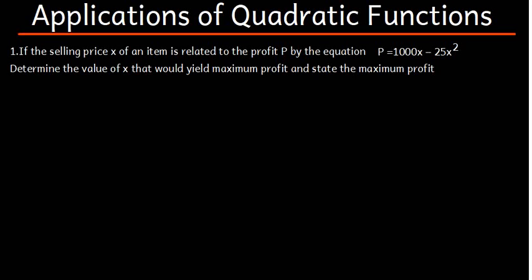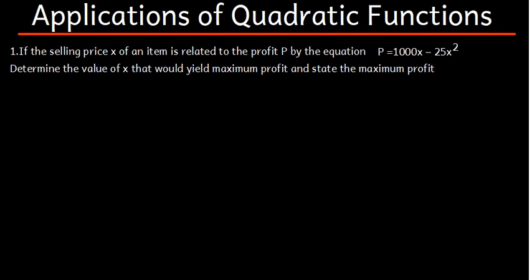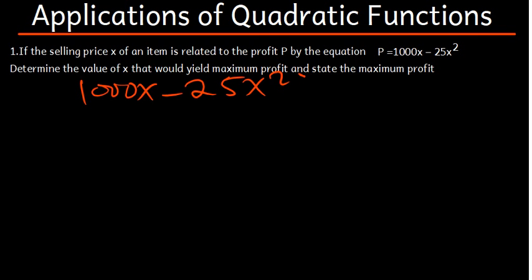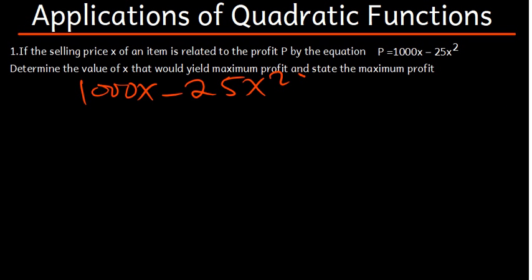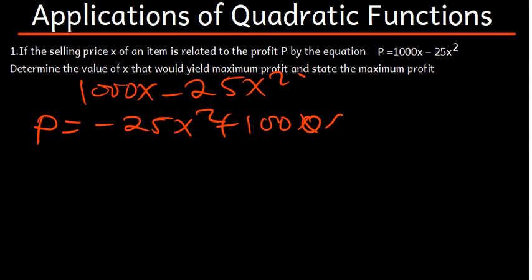This question is under quadratic functions, specifically the completing the square method. We want to determine the value of X and the value of P, which is the profit. We have 1000X minus 25X squared. The quadratic function is in the form AX squared plus BX plus C, where C is just 0. So we write P = negative 25X squared plus 1000X plus 0.